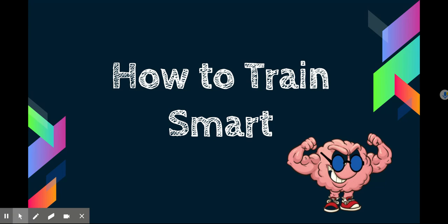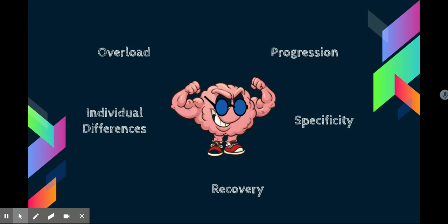How do you train smart? Unfortunately, a lot of people — adults that train — do not train smart, and they're susceptible to recurring consistent injuries and burnout, feeling like they're being counterproductive. That's why understanding these principles is really important. The training principles we're going to look at are: overload, progression, specificity, recovery, and individual differences. These are the foundational principles to smart, effective training.